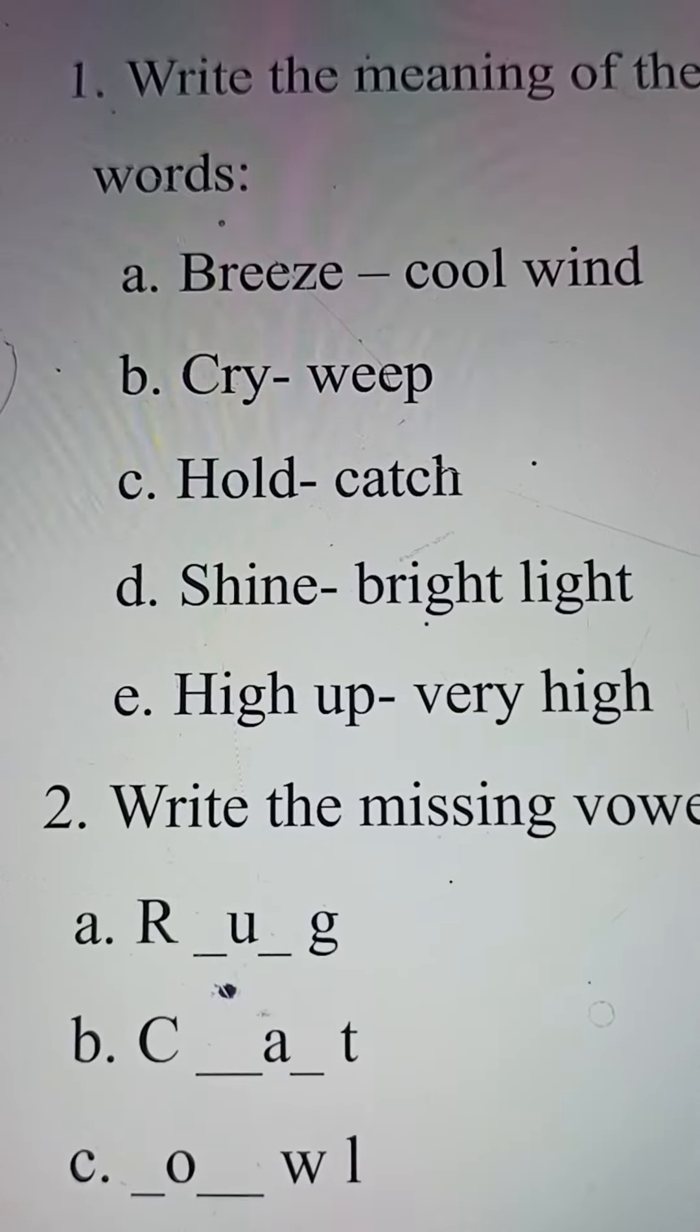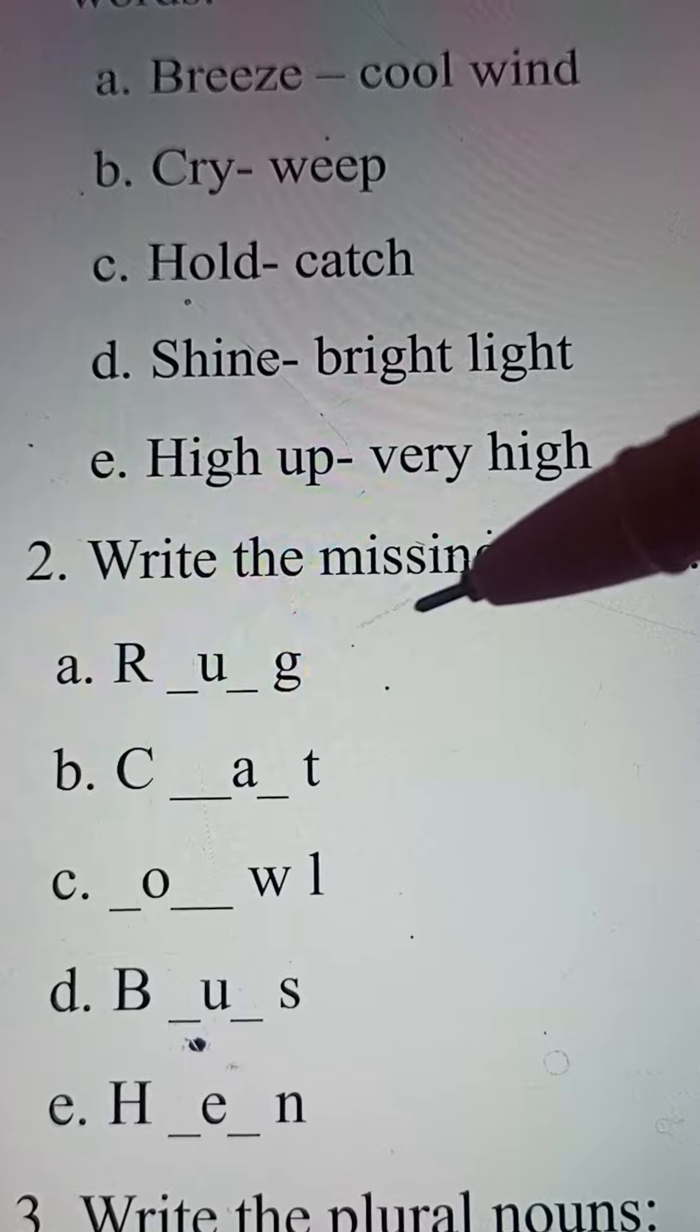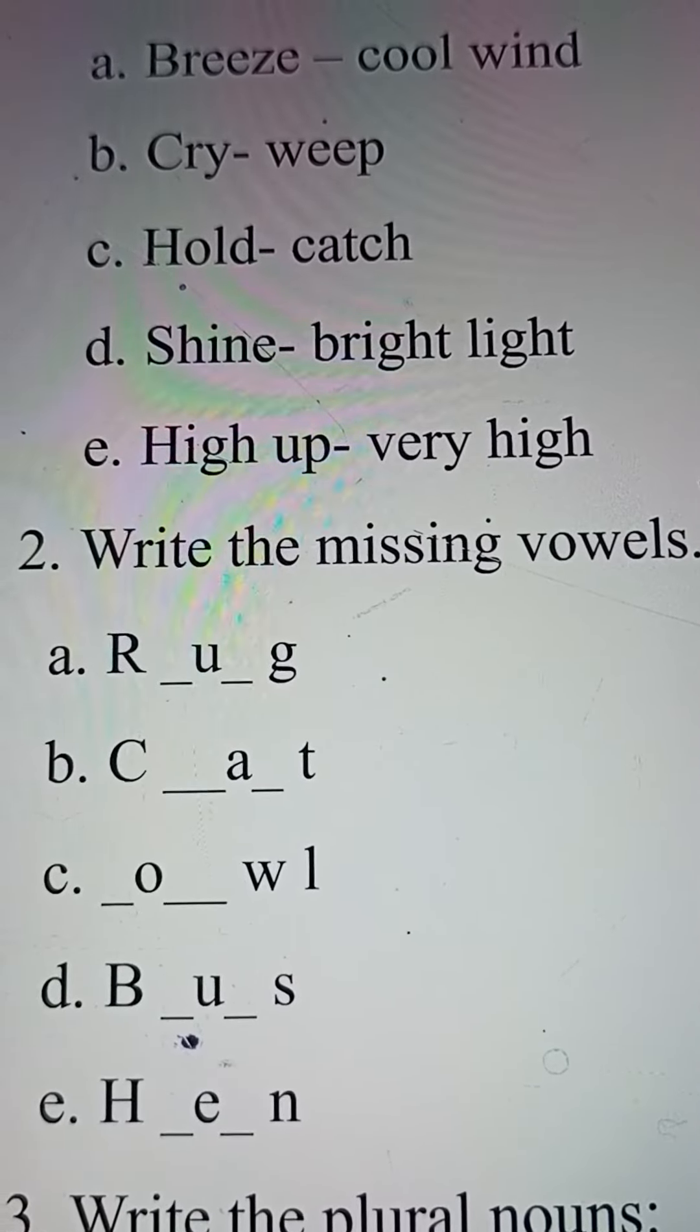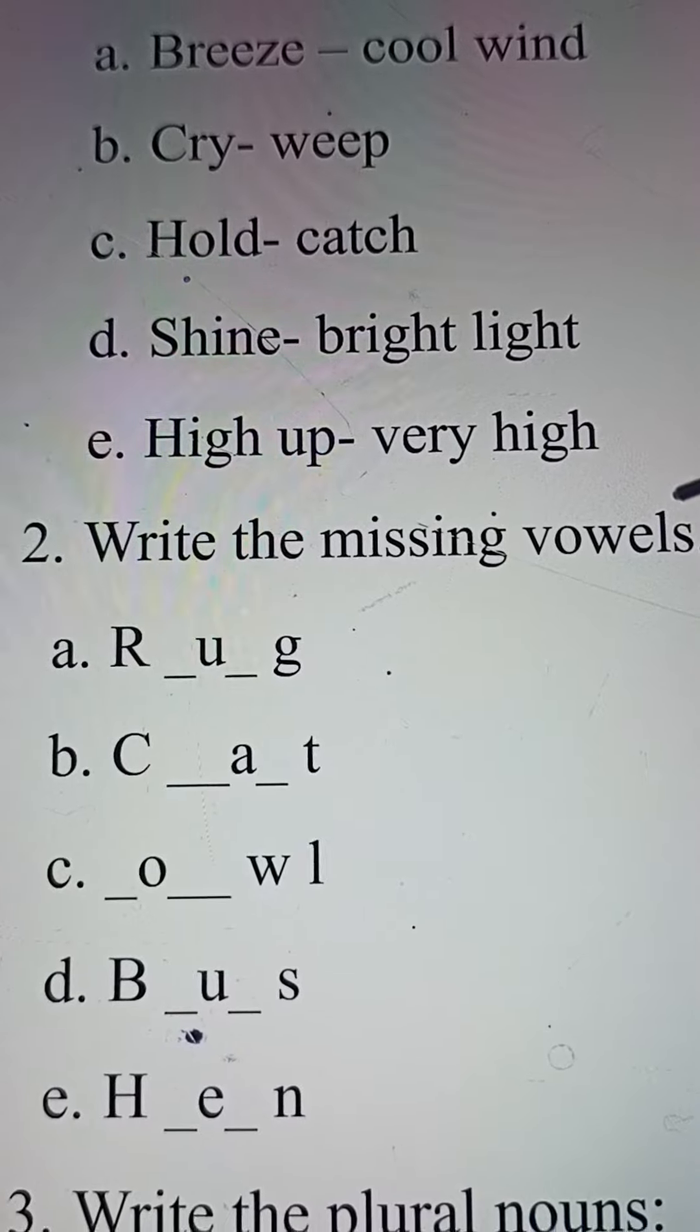Now, number two. Write the missing vowels. You have to write the missing vowels. Like you can see here. You know what are vowels? A, E, I, O, U. These are the vowels, okay?